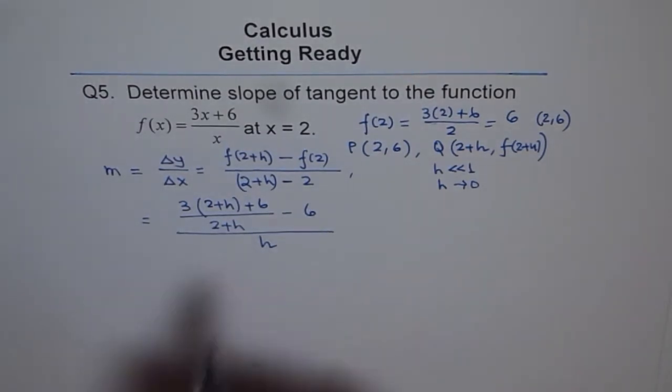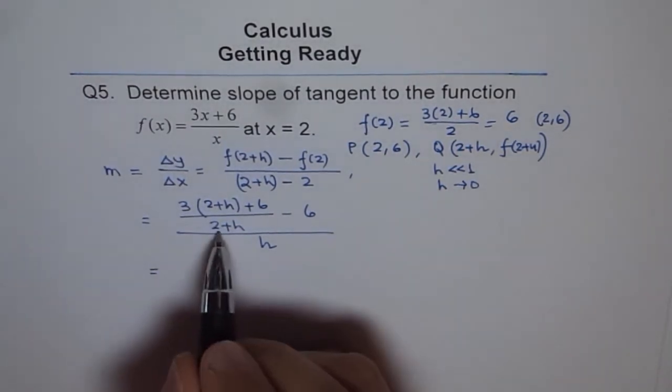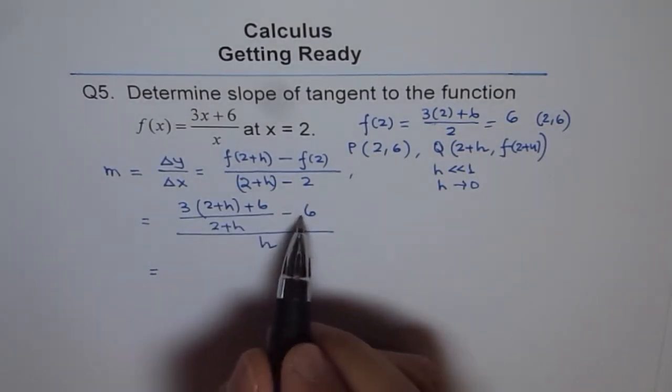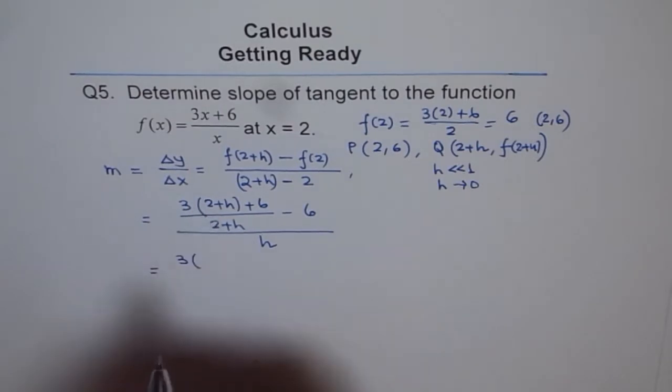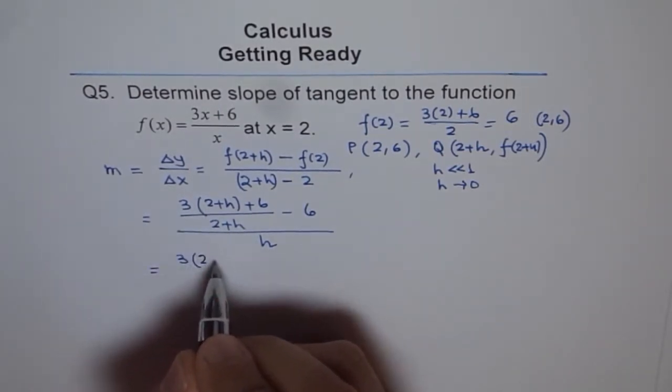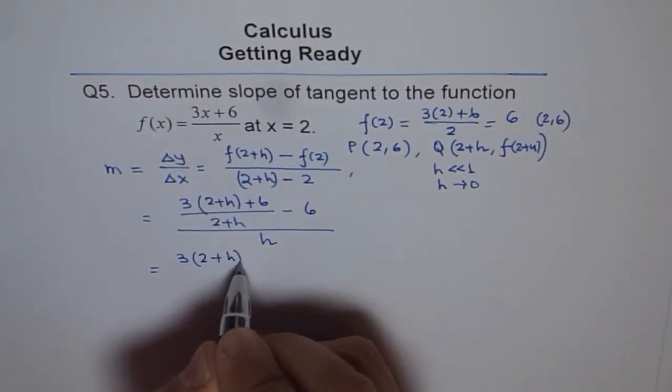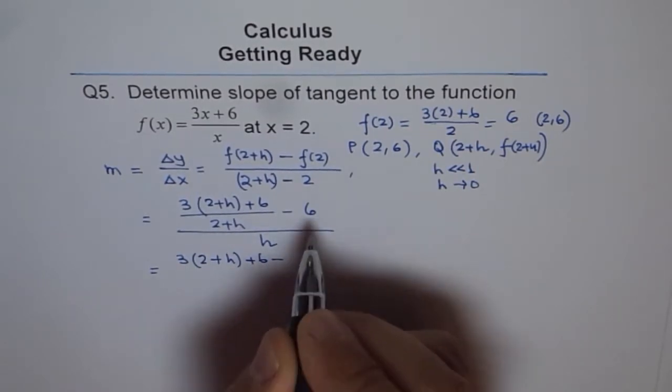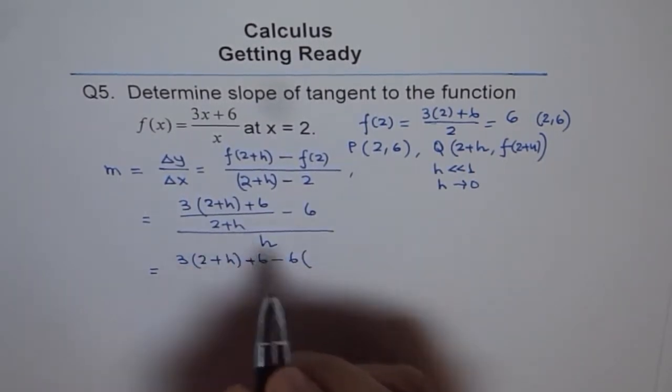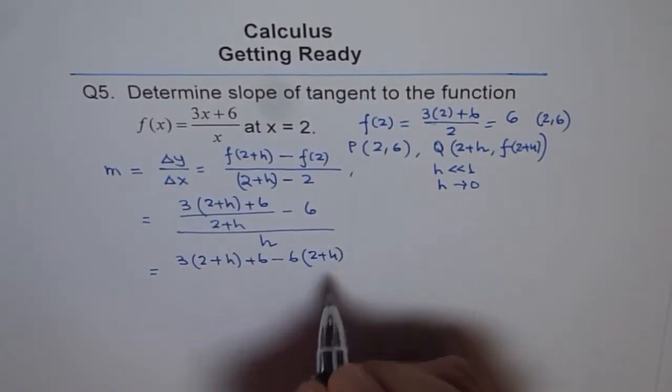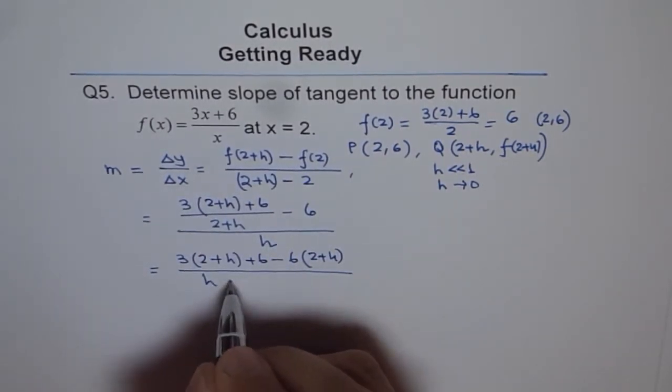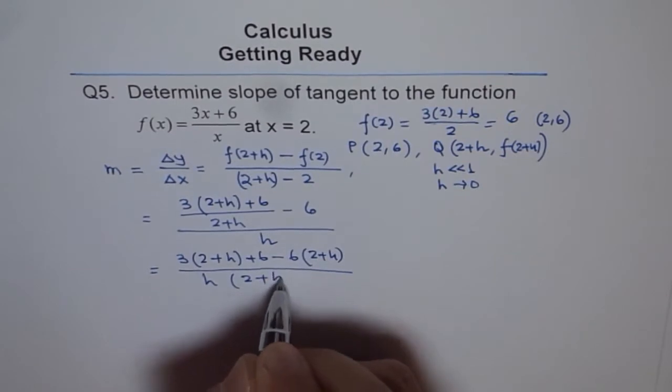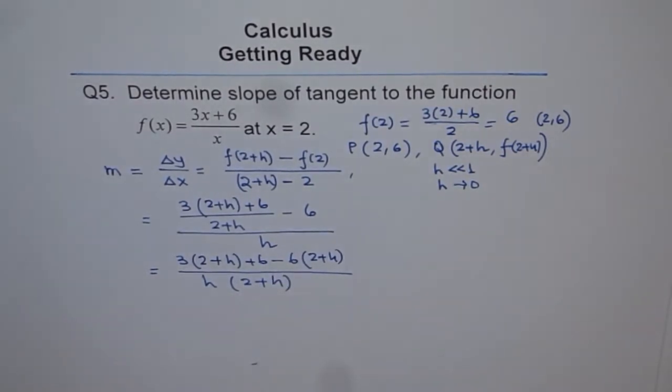Now we can simplify this. Let us take common denominator. So we get in the numerator, 3(2 + h) plus 6 minus 6(2 + h), divided by h times (2 + h). That is what we get.